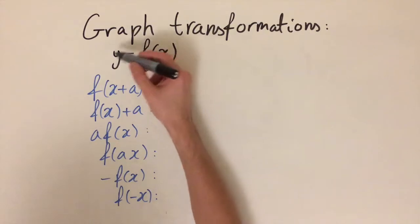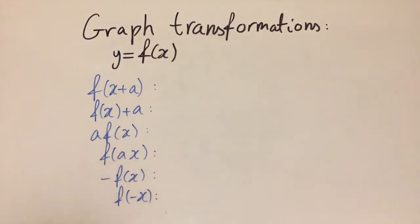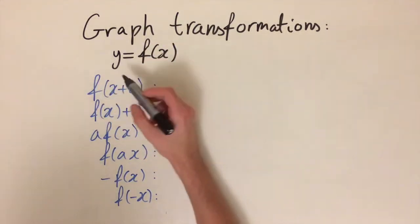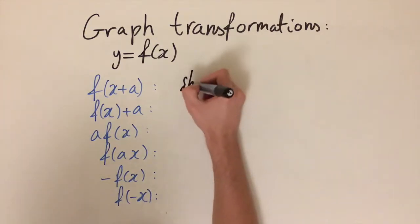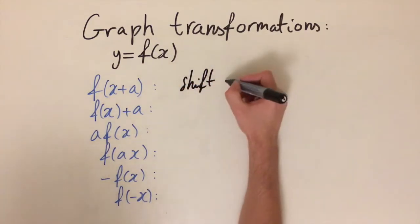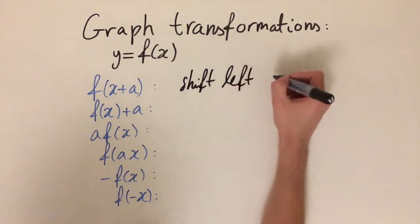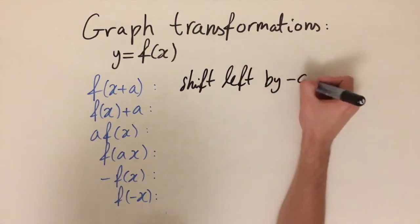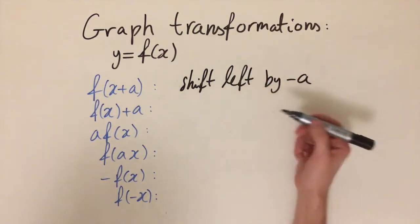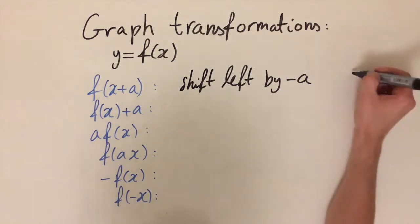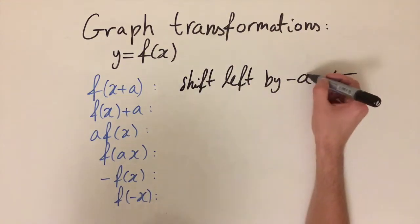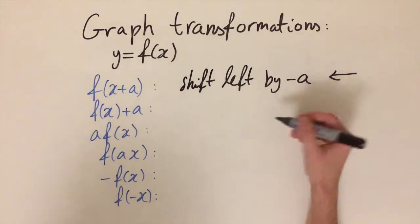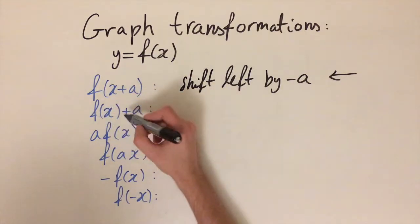So firstly, if we replace x by x plus a, so we now have f(x+a), this corresponds to a shift left by minus a. So this corresponds to a horizontal translation—we are moving the graph horizontally to the left by a units.